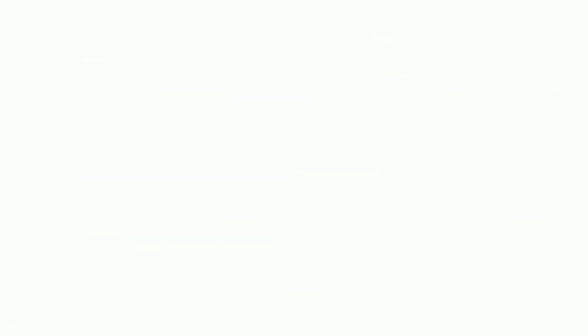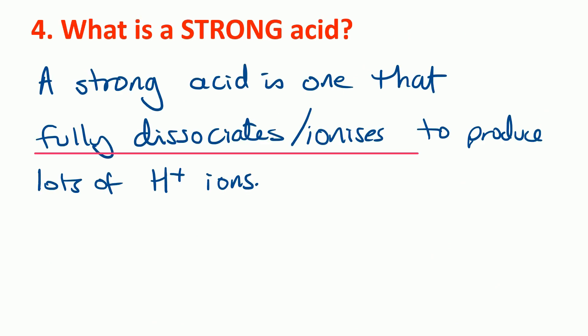At number 4, we have an old favourite. What is a strong acid? And you need to remember a strong acid is one that fully dissociates or ionises to produce lots of hydrogen ions. And I'll put a link up now to a video explaining this in more detail.